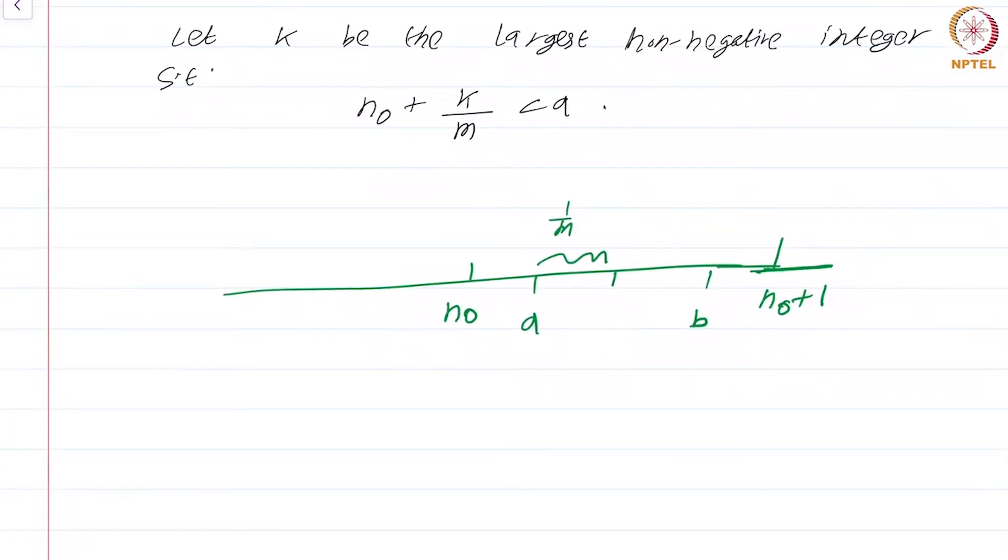Then what we are doing is starting from n₀, we are first going through n₀ + 1/m, then we are going to n₀ + 2/m, so on and so forth. And we are finding the largest integer such that n₀ + k/m is less than a. There will always be such an integer simply because n₀ is less than a. Eventually, when k is m you get n₀+1 which certainly exceeds a. So at some integer it has to be the largest integer such that n₀ + k/m less than a.